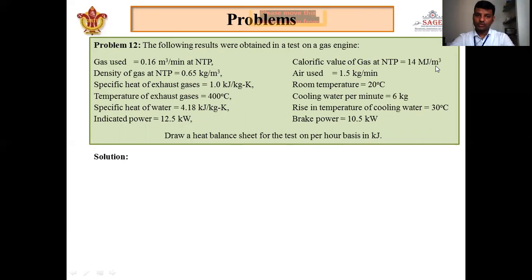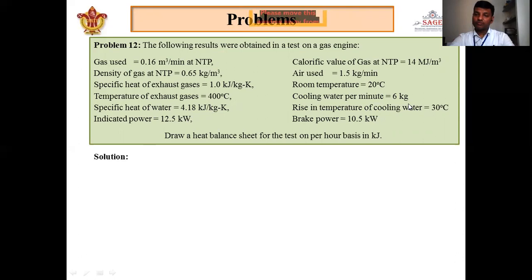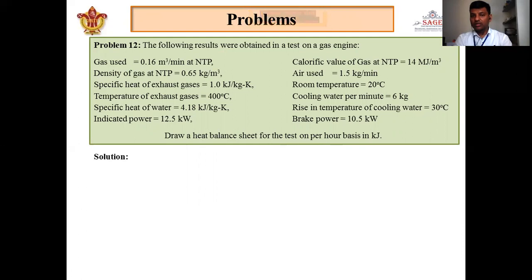Air used is 1.5 kg per minute. Specific heat of exhaust gas is given. Room temperature is 20°C. Temperature of exhaust gas is 400°C. Cooling water flow rate is 6 kg per minute. Specific heat of water is 4.18 kJ/kg·K. Rise in temperature of cooling water is 30°C. Indicated power is 12.5 kW and brake power is 10.5 kW. We are asked to draw the heat balance sheet on a per-hour basis.